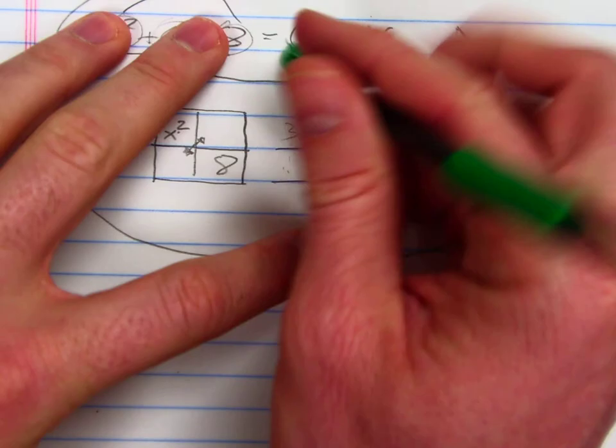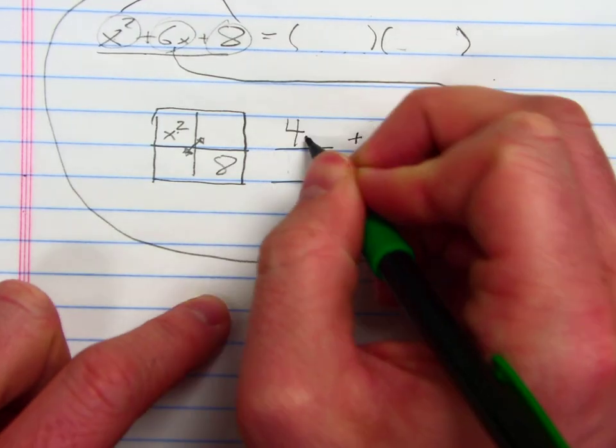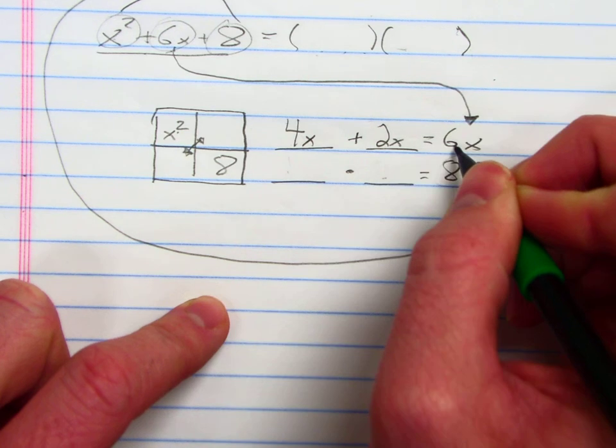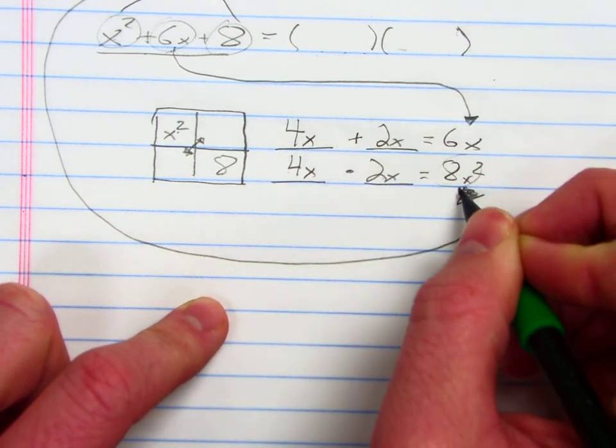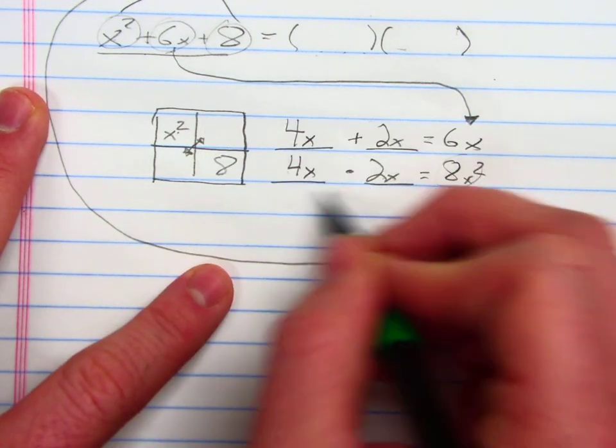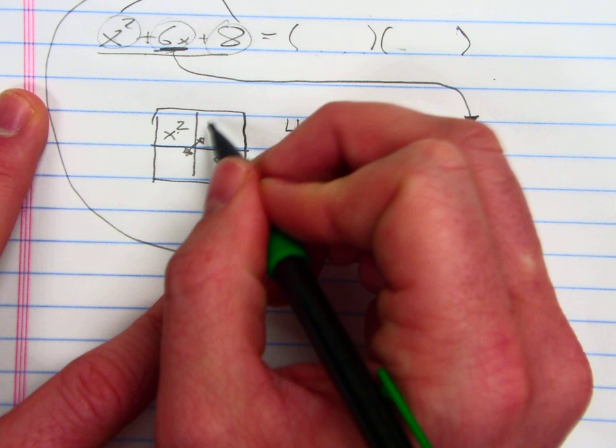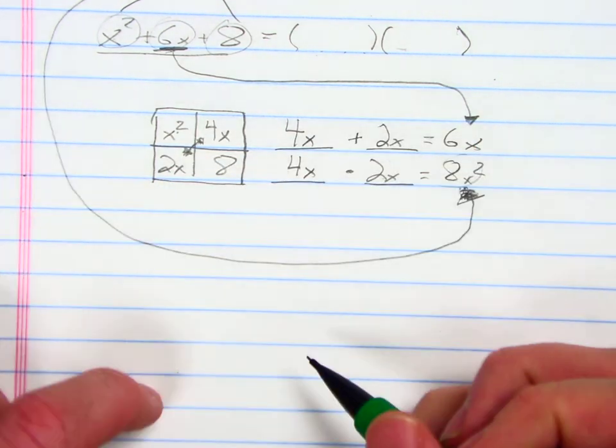I could do 4x plus 2x equals 6x, and 4x times 2x does give me 8x squared. So I want to use that form of 6x. I want to use 4x and 2x, and it doesn't matter which one I put where. I can put the 4x here and I can put the 2x there and I will get the same answer.